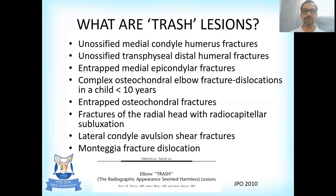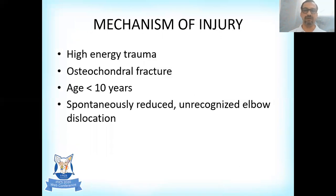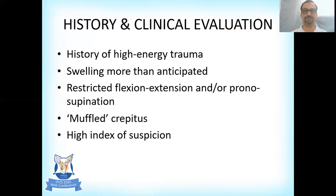If not picked up and treated properly, the consequences can be very difficult to treat. These injuries typically occur because of high energy trauma such as a fall. All of them are osteochondral fractures, typically seen in children younger than 10 years. Most of the time these fractures are associated with spontaneously reduced and unrecognized elbow dislocation, during which the osteochondral fragment gets chipped off and trapped.